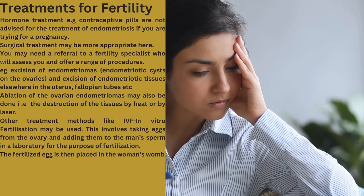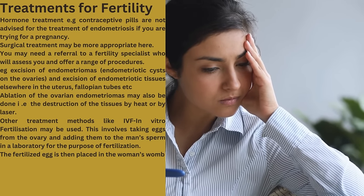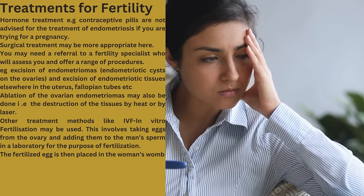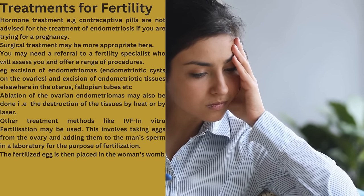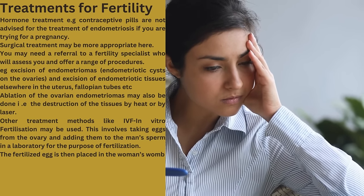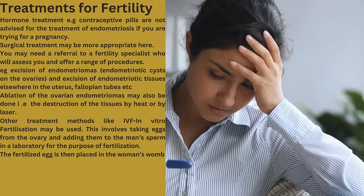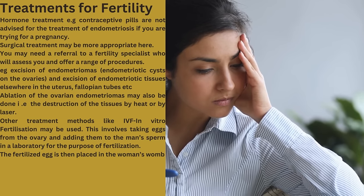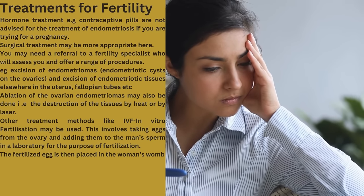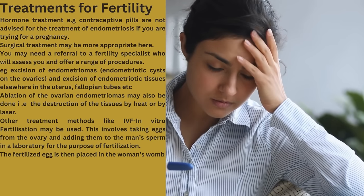Treatments for fertility: Hormone treatments such as the contraceptive pill are not advised for treating endometriosis if you are trying for a pregnancy. Surgical treatment may be more appropriate, and you may need a referral to a fertility specialist who will assess you and offer procedures such as excision of endometriomas (endometriosis on the ovaries), excision of endometriotic tissues elsewhere, or ablation of ovarian endometriomas using heat or laser. Other treatment methods like IVF (in vitro fertilization) may be used — this involves taking eggs from the ovary, adding them to the man's sperm in a laboratory for fertilization, and then placing the fertilized egg into the woman's womb.